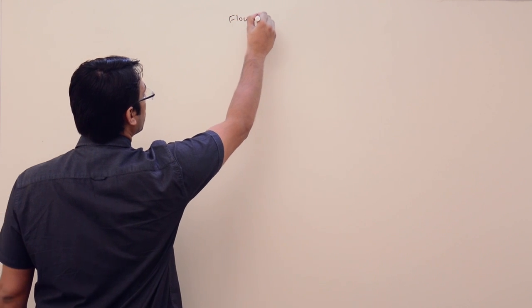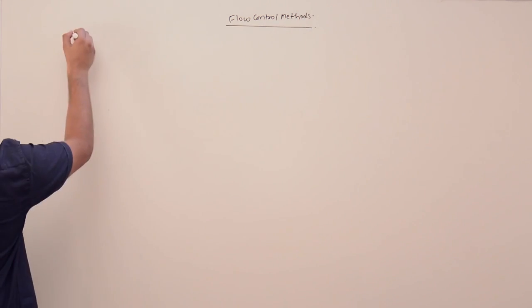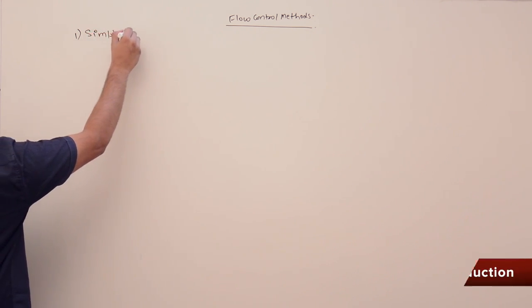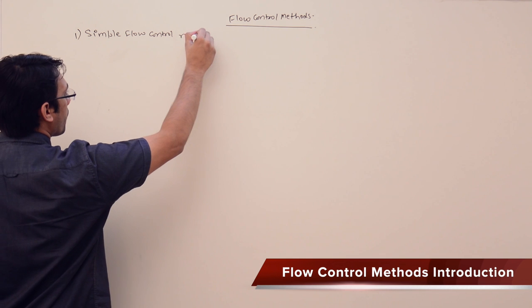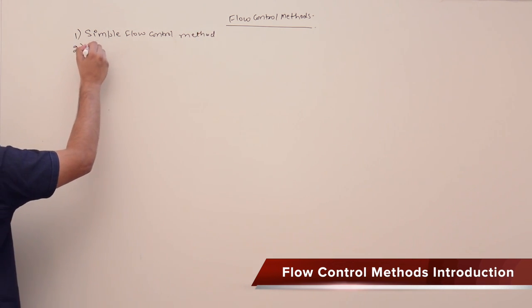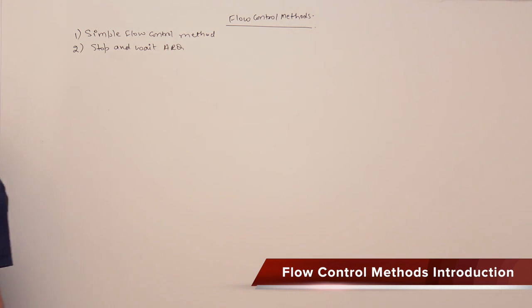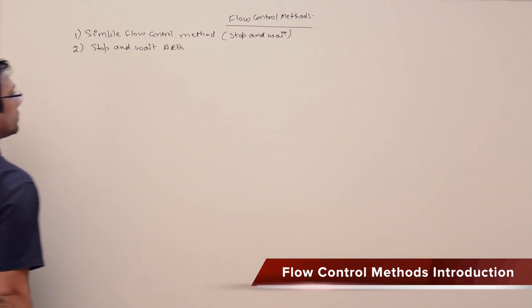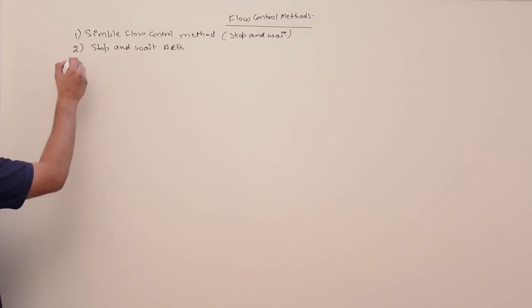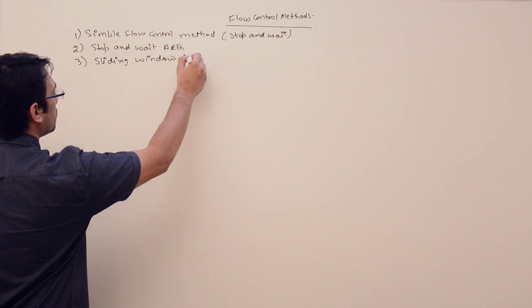We are going to discuss about flow control methods. Initially we will discuss about simple flow control methods, what are the limitations of simple flow control methods. Then we will discuss about stop and wait ARQ — automatic repeat request. Simple flow control method is also called simple stop and wait protocol. Then we'll discuss sliding window protocol.